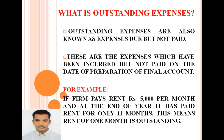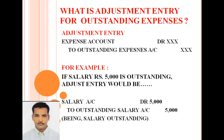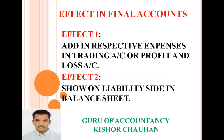Now, what is the adjustment entry for outstanding expense? Since it is our liability, liability is credited and it will increase our expense amount, so expense is debited. The adjustment entry would be: Expense Account Debit, To Outstanding Expense Account. For example, if salary of Rs. 5,000 is outstanding, the entry would be: Salary Account Debit Rs. 5,000, To Outstanding Salary Rs. 5,000 — being salary outstanding. So the particular expense is debited and outstanding expense is credited because our liability has increased.